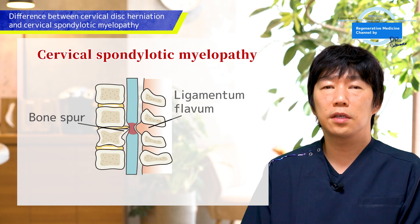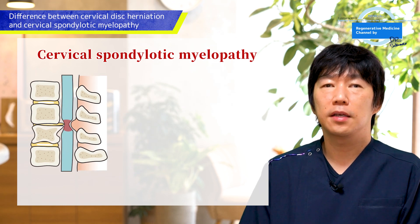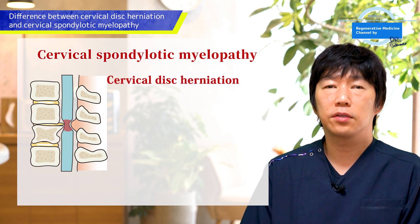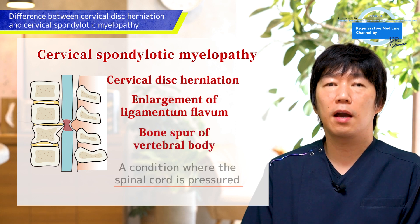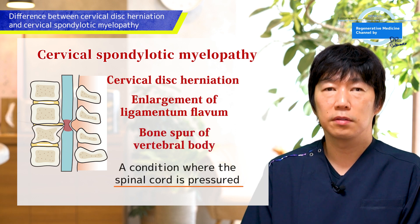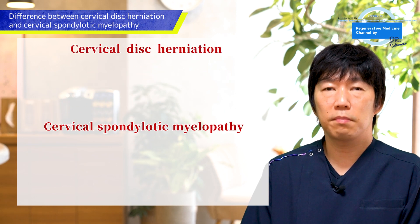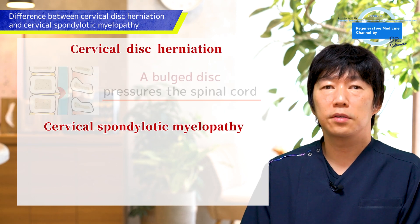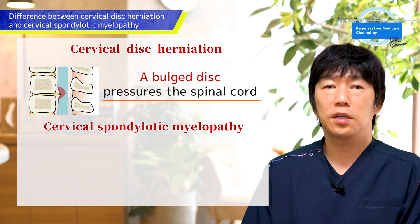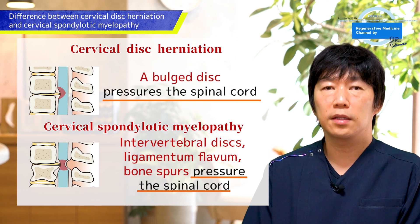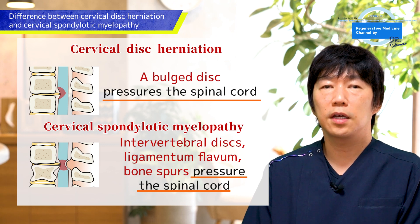Cervical spondylotic myelopathy is a condition where the spinal cord is pressured by a cervical disc herniation, ligamentum flavum, and bone spurs from the vertebral body. Cervical disc herniation is caused by a bulging disc pressuring the spinal cord from the front side. Contrarily, cervical spondylotic myelopathy can occur when intervertebral discs, bone spurs, or ligamentum flavum narrow the spinal canal and pressure the spinal cord.